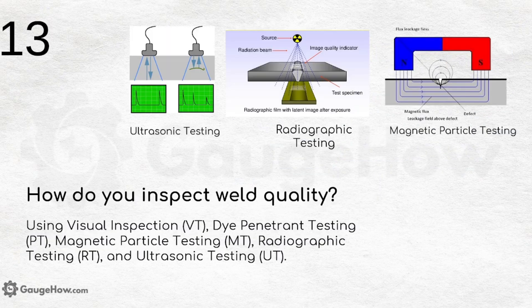How do you inspect welding quality? Using visual inspection, dye penetrant testing (PT), magnetic particle testing (MT), radiographic testing (RT), and ultrasonic testing (UT).